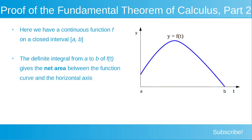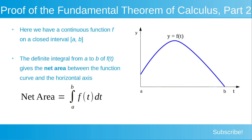The definite integral from a to b of f gives the net area between the function curve and the horizontal axis. We can calculate the net area as being equal to the integral from a to b of f dt, where a is the lower limit of integration, b is our upper limit of integration, and f is our continuous function.